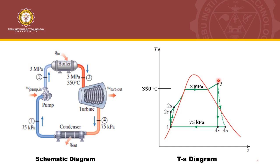The steam undergoes expansion in the turbine. Because of the irreversibility in the turbine, the expansion is no longer isentropic and it approaches the curve to point 4A. The steam is then condensed, releasing heat in the condenser, and it reaches the original point 1. So in this cycle, we have 6 important points: point 1, point 2S, point 2A, point 3, point 4A, and point 4S.